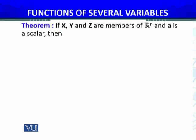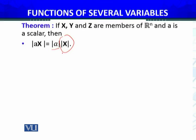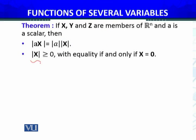Now we have another theorem. If x, y, and z are members of Euclidean space Rn, and A is a scalar, then there are some properties of the dot product, which I call the inner product. The norm or magnitude of the vector A times x equals the absolute value of A times the magnitude of vector x. The magnitude of vector x is always greater than or equal to zero, with equality if and only if the vector is the null vector.